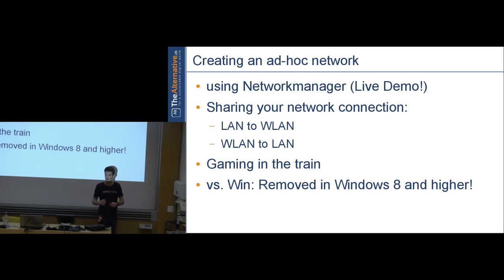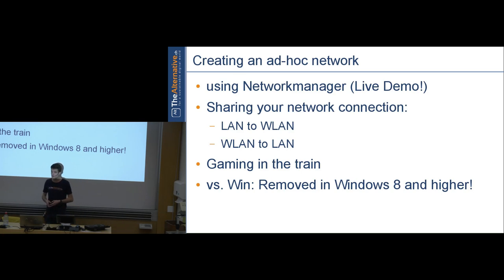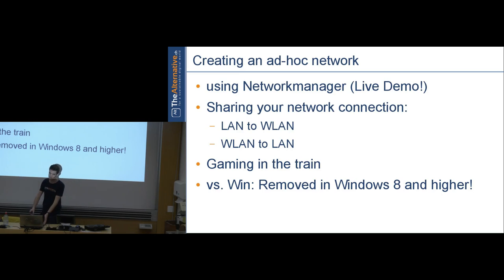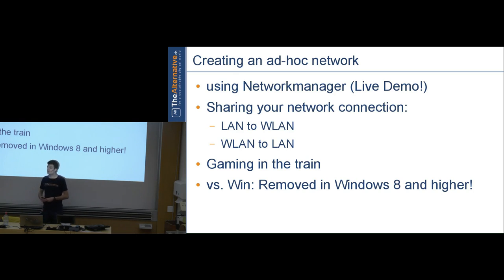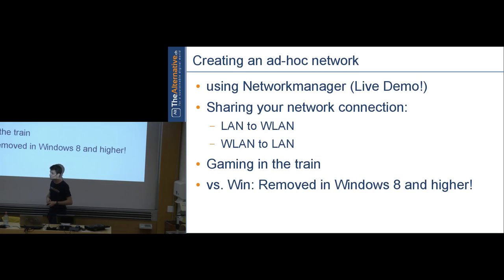Windows 8 removed ad hoc networking, which was very frustrating. Back in the old days, you could create a wireless network in a train, hook up all computers to the one with the connection, and game online even through tunnels without a router. On Linux this still works — or there's a console hack to get it back on Windows.